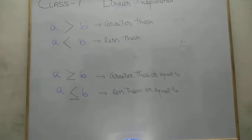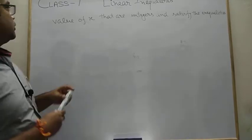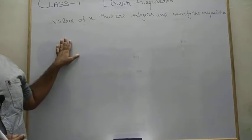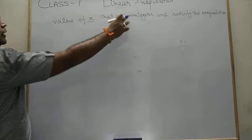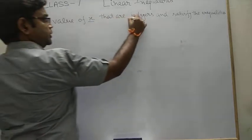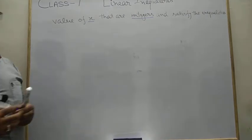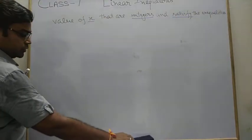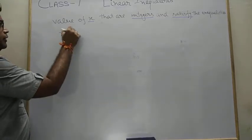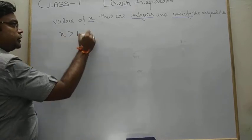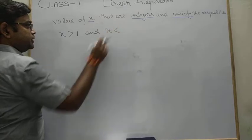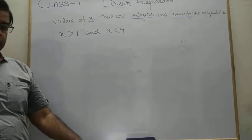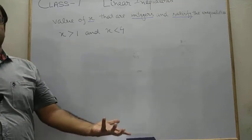From this we start the linear inequalities chapter. This question says: find the values of x that are integers and also satisfy the given inequalities. Integer means the number may be positive, negative, or zero, but not a fraction or decimal. The inequality given is: x is greater than 1 (first condition), and x is less than 4 (second condition). We may have various answers — not just a single value.